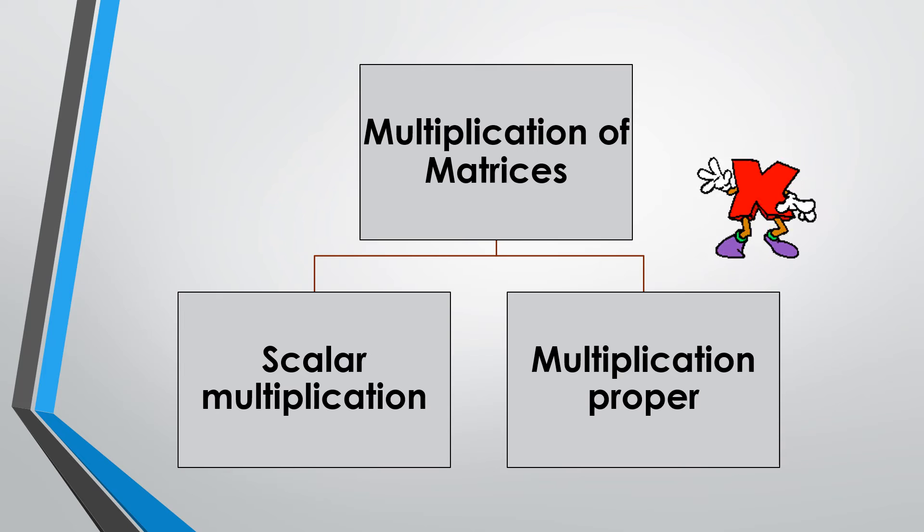Multiplication proper or multiplication of matrices. The multiplication among two matrices is possible only when the number of columns of the first matrix is equal to the number of rows of the second matrix. In other words, a matrix A is comfortable to another matrix B for multiplication. That is, AB exists only when the number of columns in A equals to the number of rows in B.